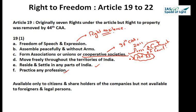The fourth freedom is to move freely throughout the territory of India. This guarantees citizens the right to move freely throughout India but can be restricted on grounds of security, public order, or for protecting the interest of scheduled tribes. Article 19 Part 5 restricts the freedom to reside and settle in any part of India, also on grounds of public order and protection of the interest of scheduled tribes.